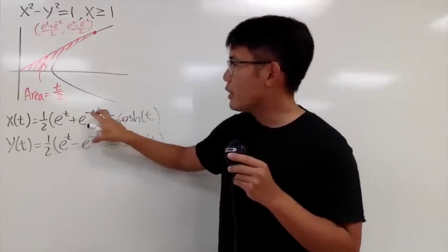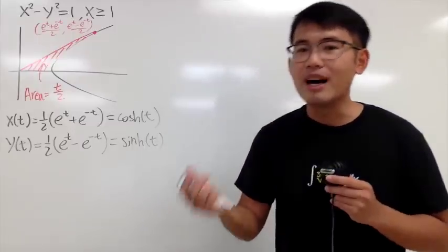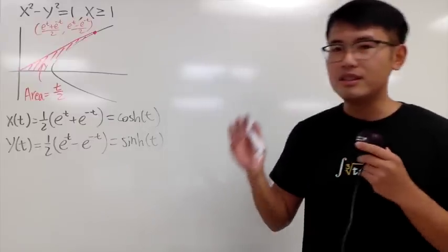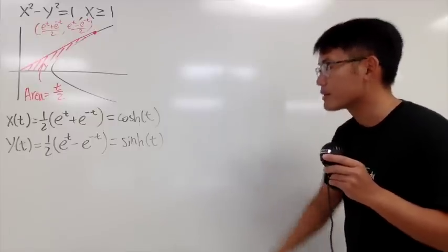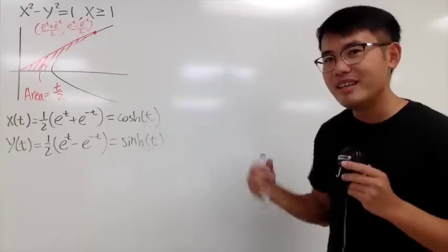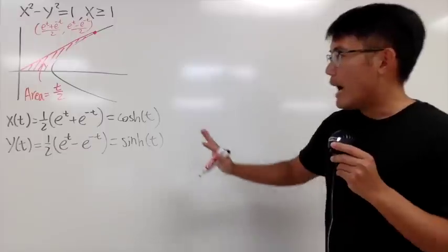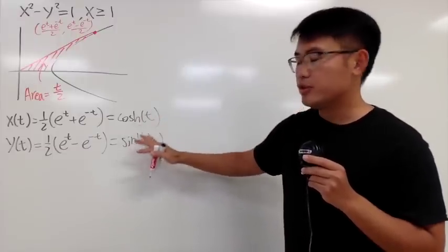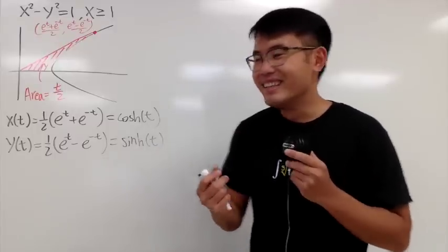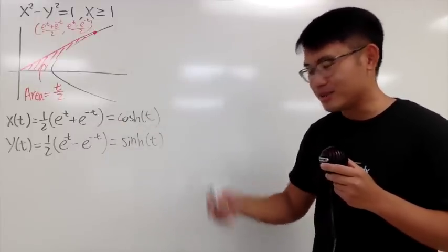Yes, there are other parameterizations of the hyperbola, but those t in those equations, they have no geometric connections, unlike this one right here. Once again, you see, when you have this t right here, this area is in fact t over 2, which is really similar to the usual trig functions on the unit circle. And if you haven't seen my other videos, be sure you guys go check them out. I will have links in the description. And we also talk about the connection between the hyperbolic trig functions and the regular trig functions in the complex world in the previous video.